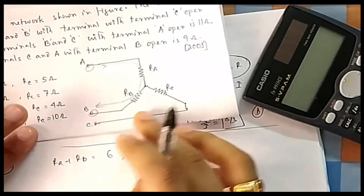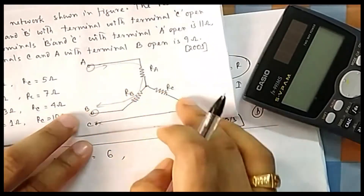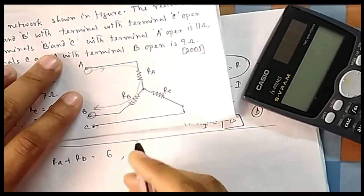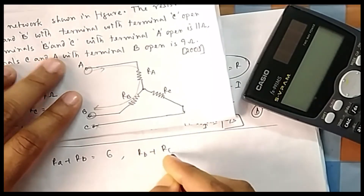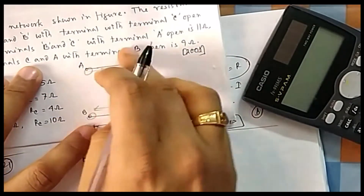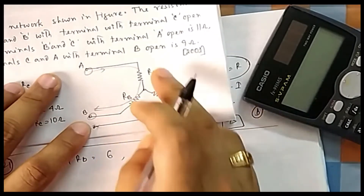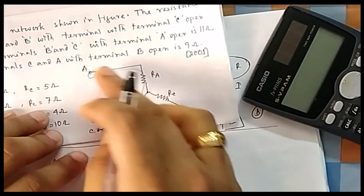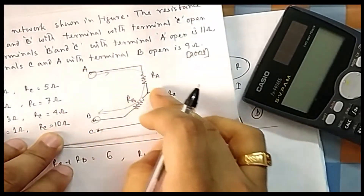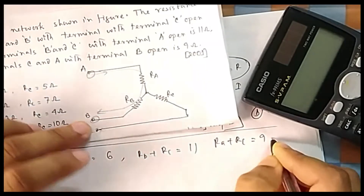Similarly, if A is open, between B and C, only Rb + Rc will contribute, which equals 11. And if B is open, then the path gives Ra + Rc equal to 9. So we have three unknowns and three equations.